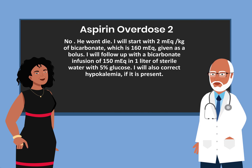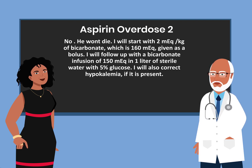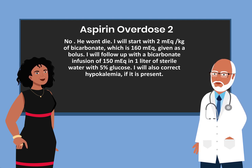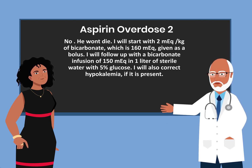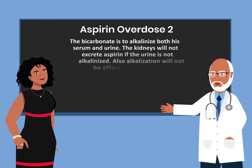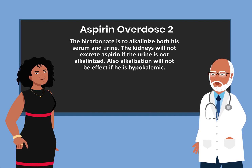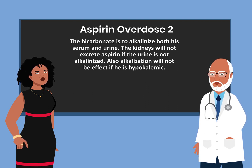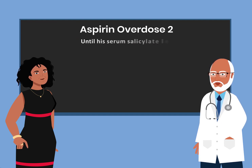I will start with 2 milliequivalents per kg of bicarbonate — that is 160 milliequivalents given as a bolus — followed by a bicarbonate infusion of 150 milliequivalents in one liter of sterile water with 5% glucose. I will also correct hypokalemia if present. The bicarbonate is to alkalinize both his serum and urine, as the kidneys will not excrete aspirin if the urine is not alkalinized, and alkalinization will not be effective if he is hypokalemic. I will alkalinize until his serum salicylate level is below 40 mg per dL.